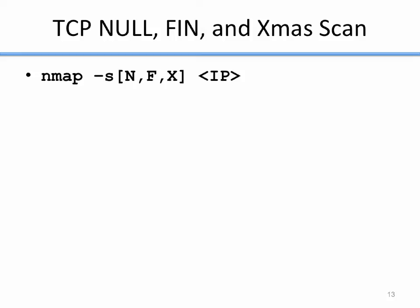The next three scan types are the null, FIN, and Christmas scans, and they're grouped together because they're all basically the same type of scan with different flags set. The syntax is 'nmap -sN' for null, '-sF' for FIN, or '-sX' for Christmas scan.